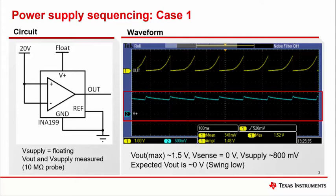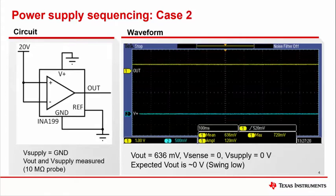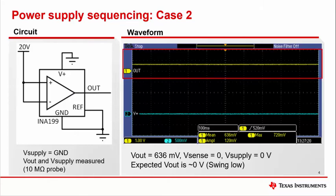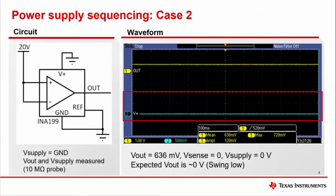If such behavior is a concern, one may simply ground the supply until power-up is convenient. Grounding the supply pin results in the output presenting a steady 600 millivolt offset from ground. A grounded supply pin can fix the supply pin behavior seen when V+ is left floating.